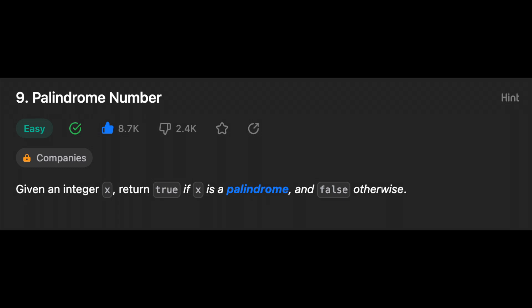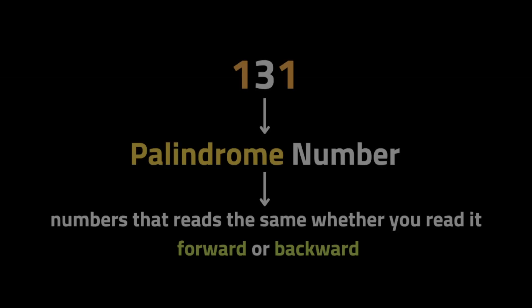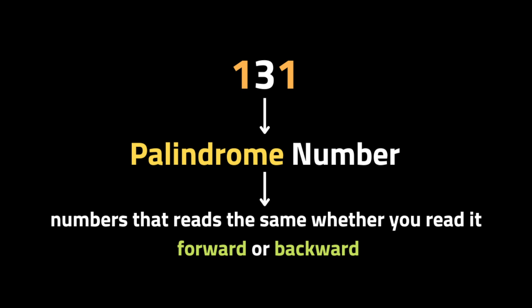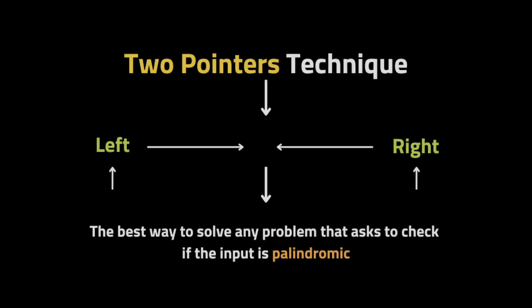Hello guys, I hope you are all doing well. In this video I will show you how to solve LeetCode problem 9 - Palindrome Number. The problem gives you an integer and asks you to check if it is a palindrome. An integer is a valid palindrome when it reads the same forward and backward.